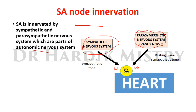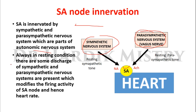The parasympathetic nervous system innervates the SA node from the right vagus nerve. At resting condition, there is some discharge from both sympathetic and parasympathetic nervous systems which modifies the firing activity of the SA node and hence the heart rate. This resting activity is called tone — sympathetic tone and parasympathetic tone.